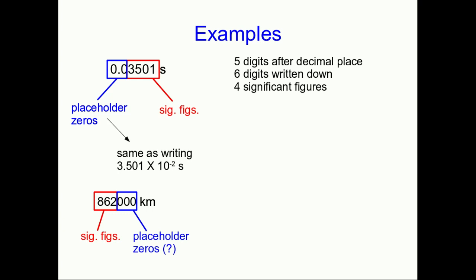Well, we don't actually know unless we did the measurement. If we know that we actually measured to the nearest kilometer, and it just happened to come out to a reasonably round number, 862,000, then those are significant figures right out to the last zero. But if we don't actually know it, if we only measured to the nearest thousand kilometers, then those are just placeholder zeros. So this is ambiguous, and you shouldn't write it this way.